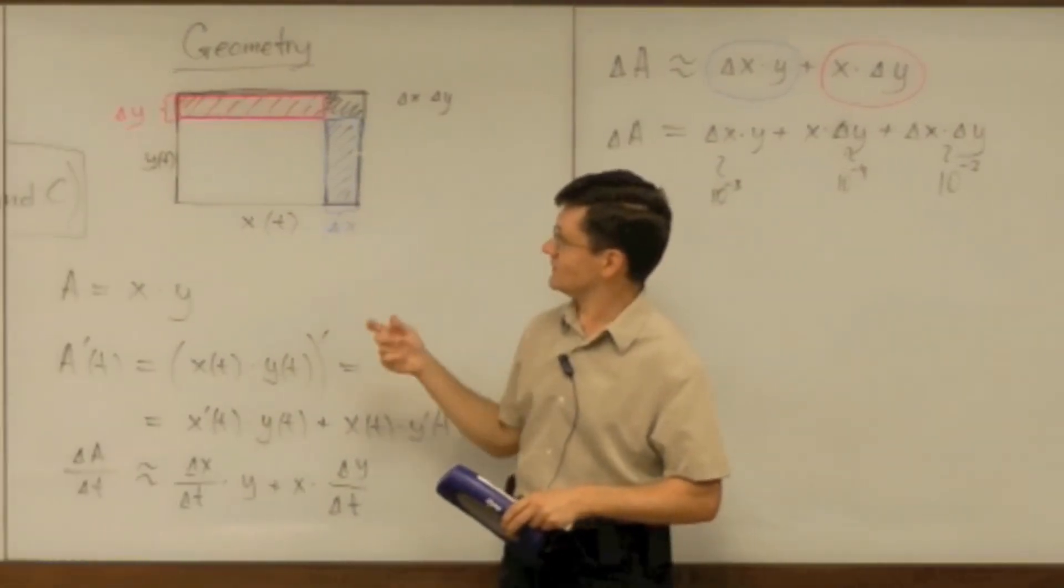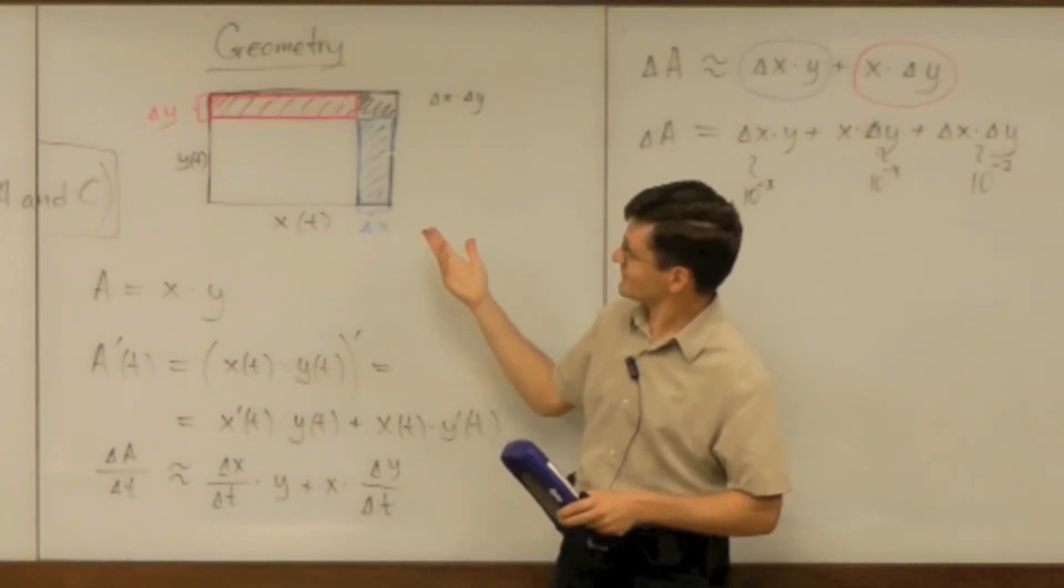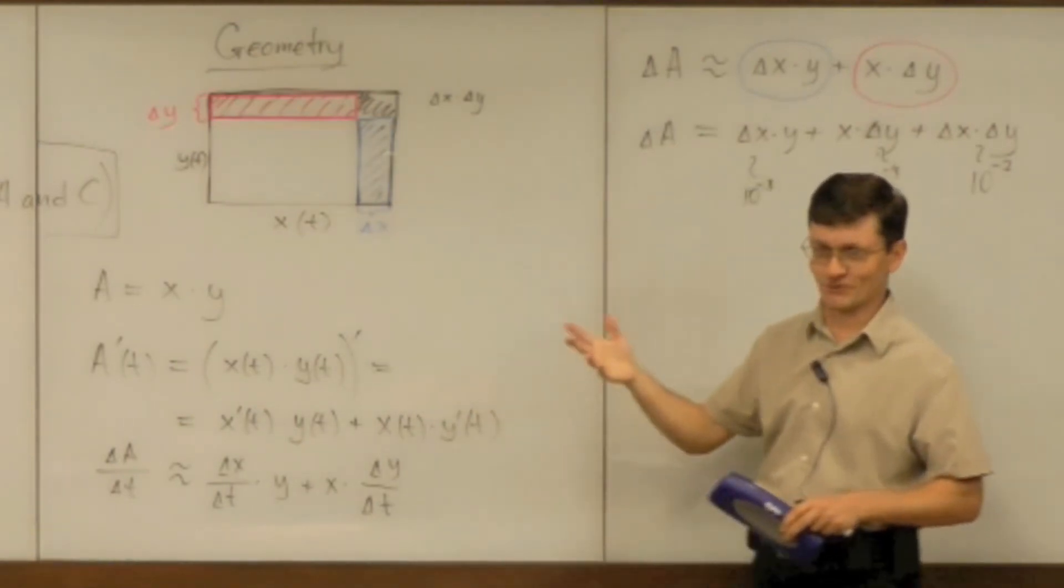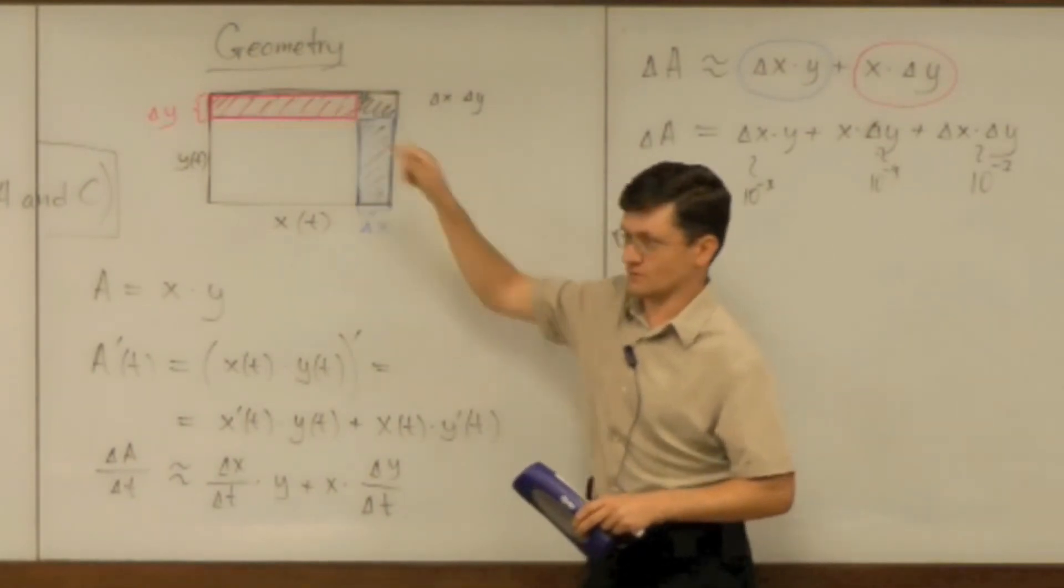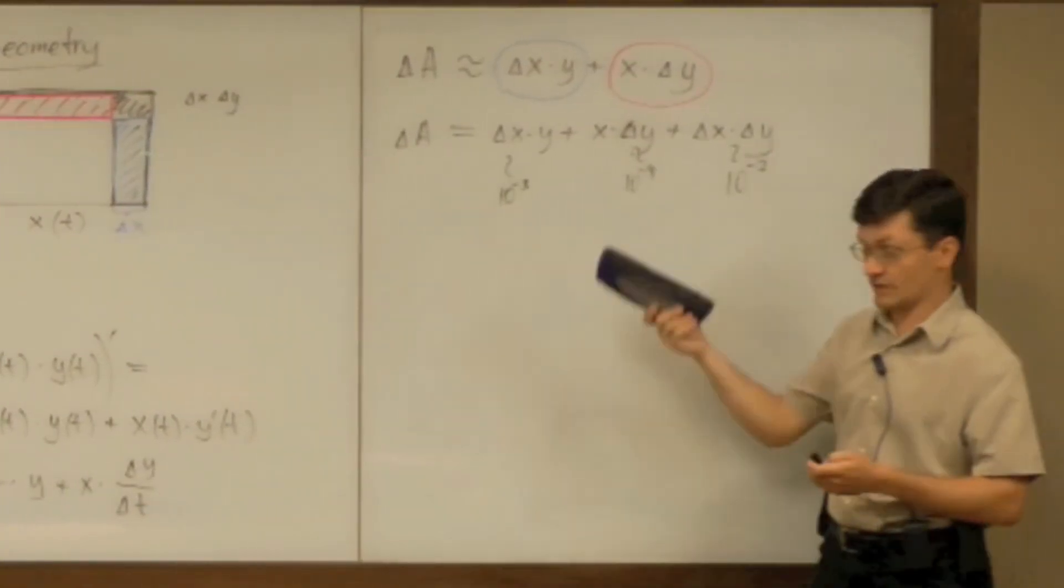This is the geometric way. Whether you can see it or not, that rectangle is much smaller in comparison to both of those or any of those.